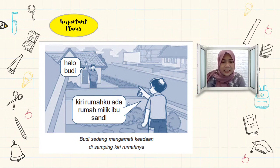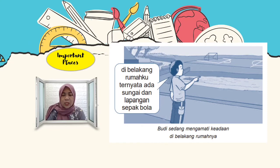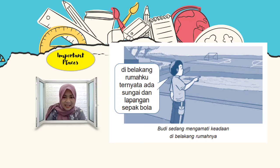Sekarang di kiri — di samping sebelah kiri. Ternyata di samping sebelah kiri rumah Budi itu rumah milik Ibu Sandi. Ada tetangganya Budi namanya Ibu Sandi, berada di samping sebelah kiri rumah Budi. Tadi sudah di depan, kemudian di samping kanan, samping kiri. Sekarang bagaimana dengan di belakang? Di belakang rumahku, kata Budi, ternyata ada sungai dan lapangan sepak bola di belakang sungainya. Ini lapangan sepak bolanya, ini sungainya — yang warna putih ini seperti gambar air. Ini adalah sungai.